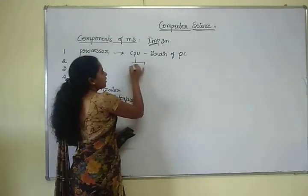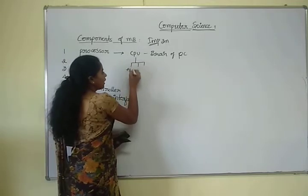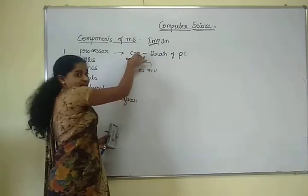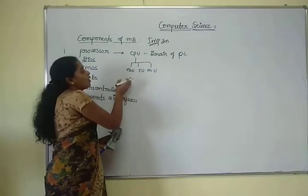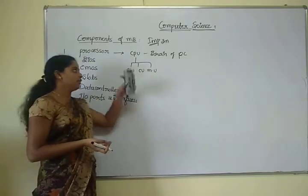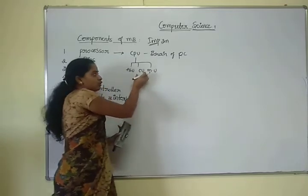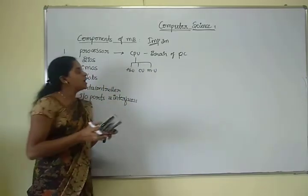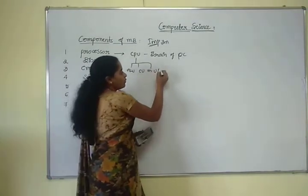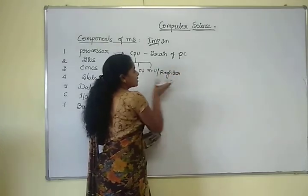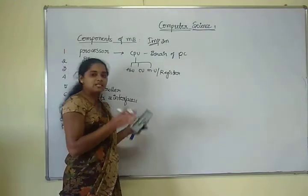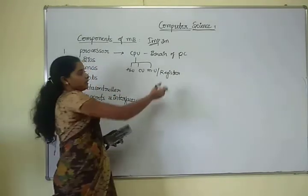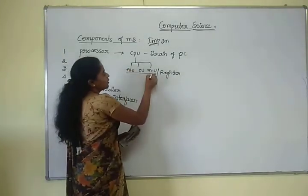The CPU is consisting of three units: one is ALU, another one is control unit, and the third one is memory unit. The memory unit is also called as register. This register is used to store all the programs, data, and instructions, and is also used to store the output results temporarily before they go into a particular output device.